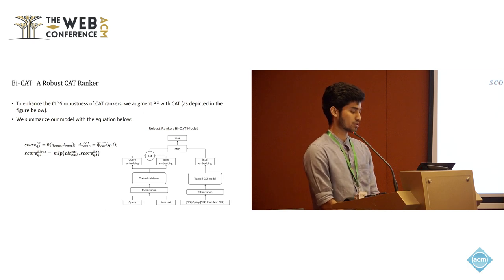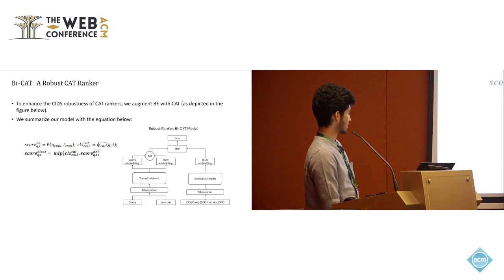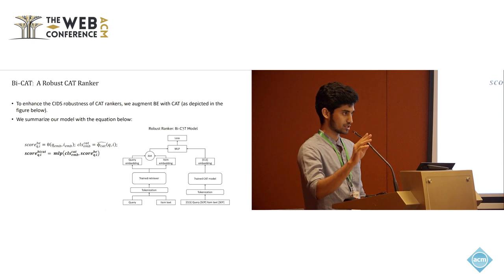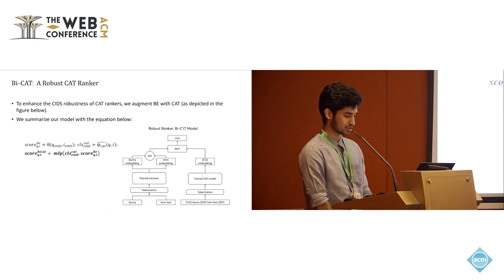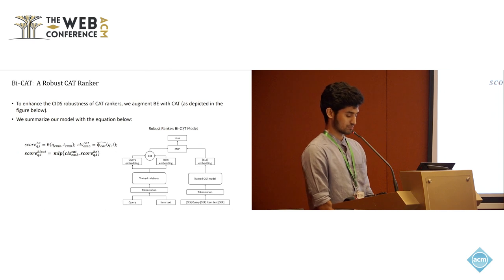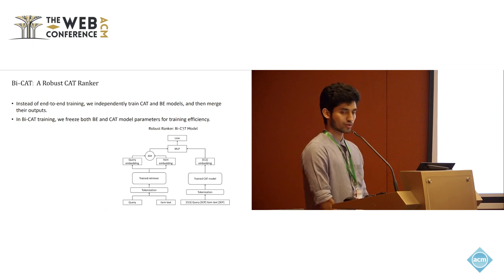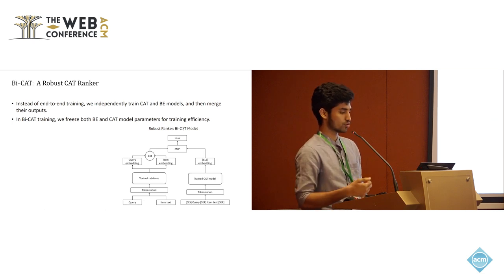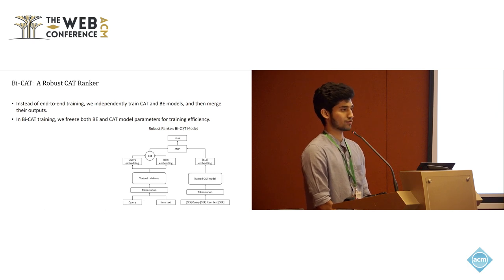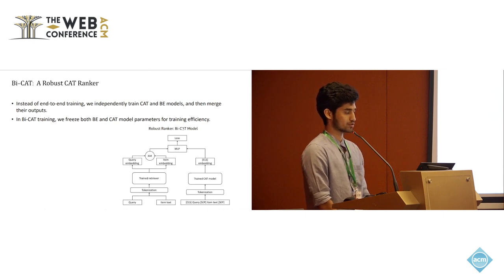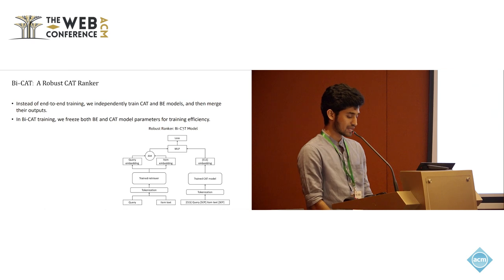Let me introduce BiCat — a robust CAT ranker. To enhance the CIDS robustness of CAT rankers, we augment BE with CAT as depicted in the figure. On the left-hand side you will see the BiEncoder architecture, on the right-hand side you will see the CAT architecture, and these are being infused with a series of MLP layers. Instead of end-to-end training, we independently train CAT and BE models and then merge their outputs. For BiCat training, we freeze both BiEncoder and CAT model parameters for training efficiency, so we just need to train the MLP, which allows us to train this model very efficiently without training the entire architecture.